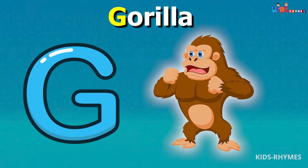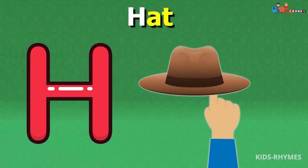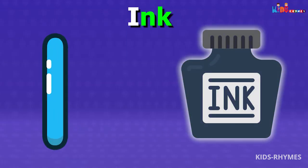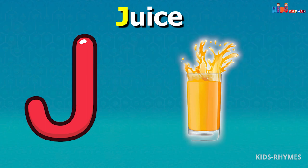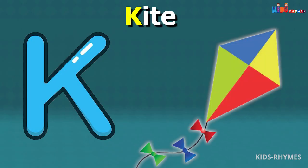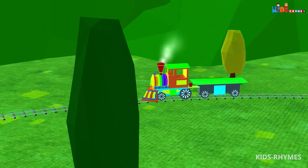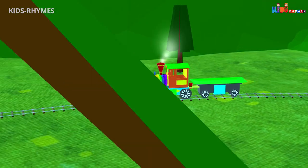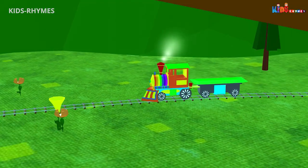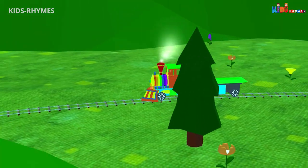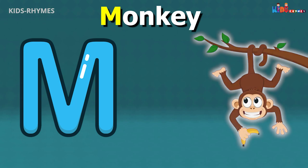G for gorilla, H for hat, I for ink, J for juice, K for kite, L for lion.